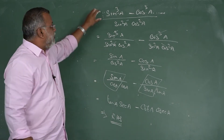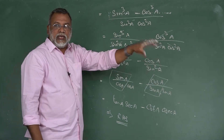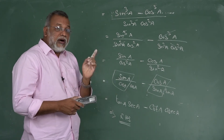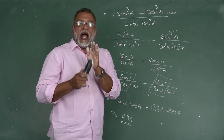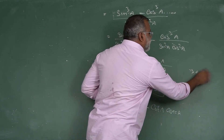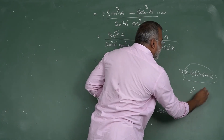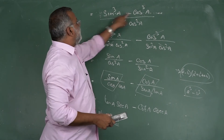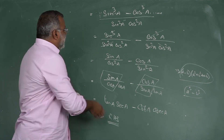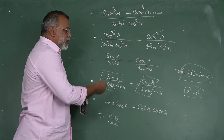Summary for this proof: from LHS, replace sec, cosec, tan, and cot with their fundamental sin/cos forms. Take the LCM, then use the algebraic identity A³ - B³ = (A - B)(A² + B² + AB). After that, split the denominator and cancel, converting back to tan, sec, cot, cosec to get the RHS.